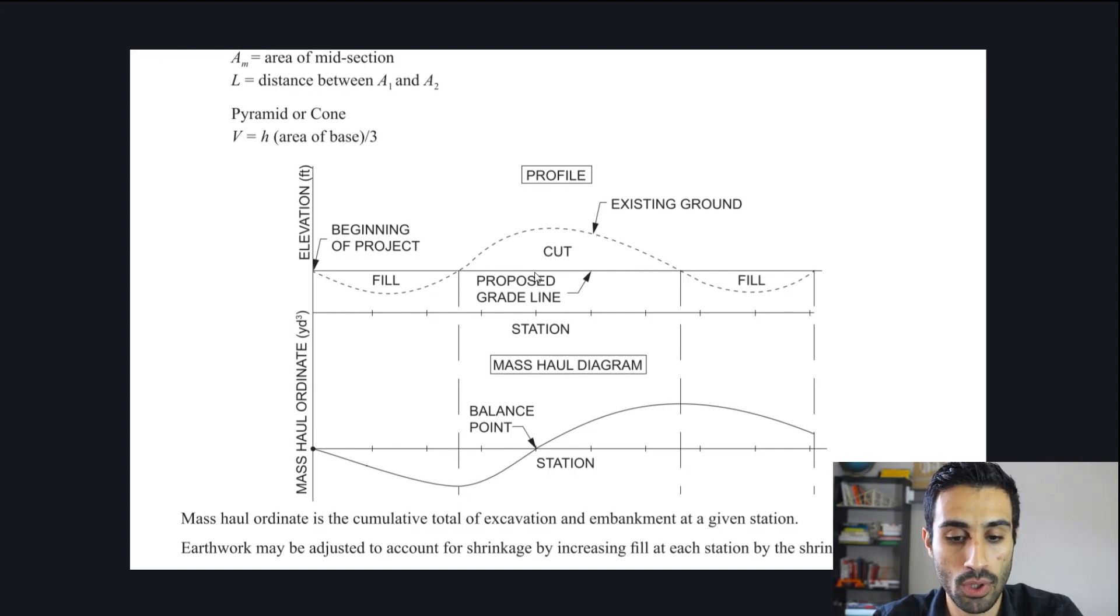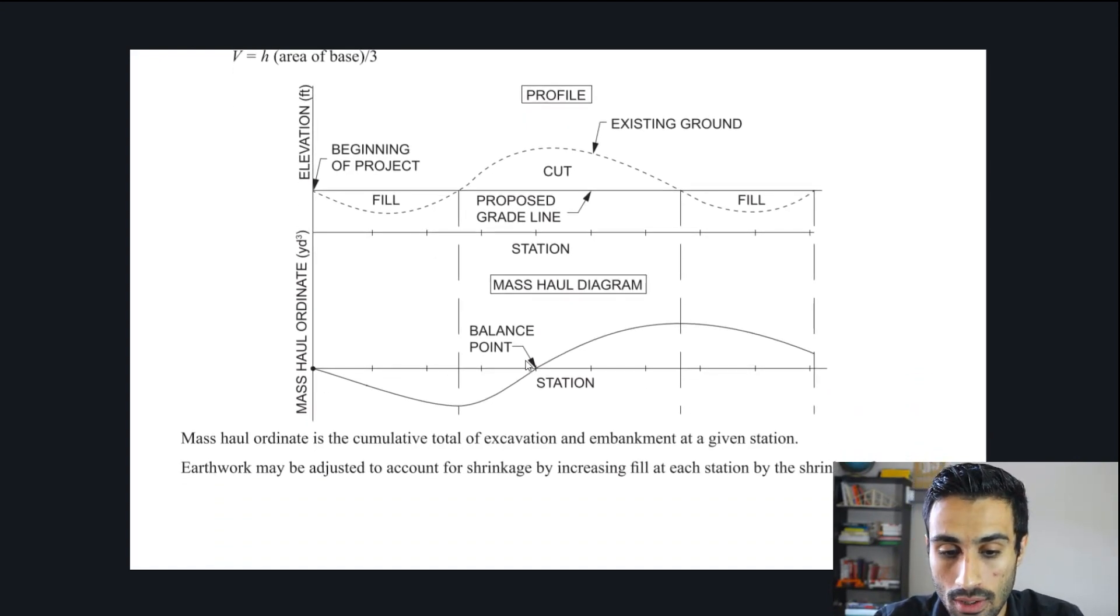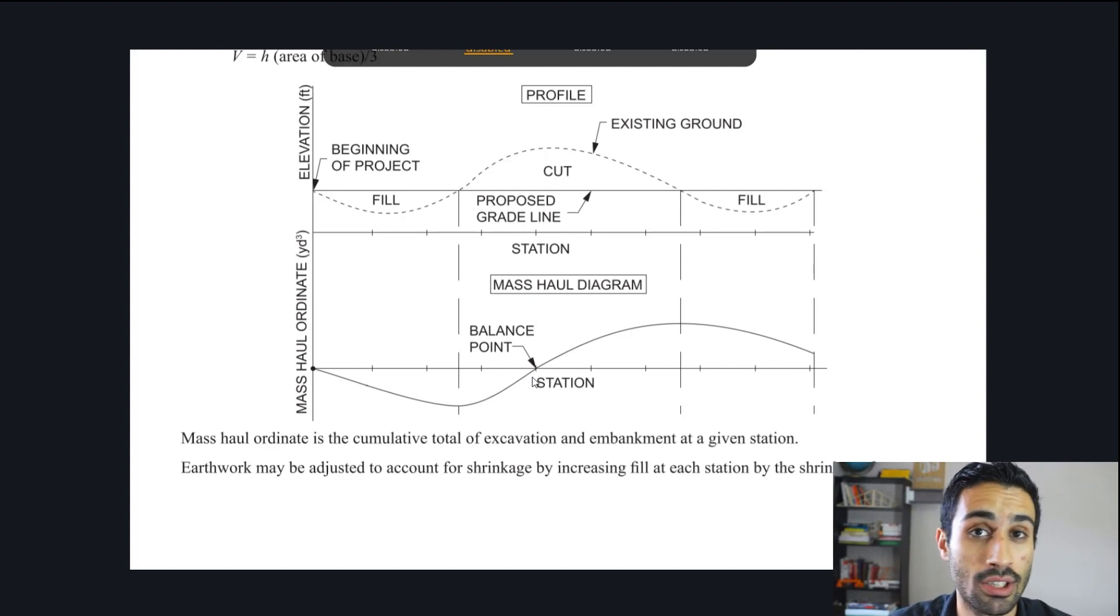When you have the existing ground and the proposed grade, that's the profile. For a profile, we can get something called the mass haul diagram. Then we get that mass haul diagram. They denote it here. They denote the balance point. Maybe we'll get an easy conceptual question. Click on the graph, find the balance point. Just know it's just the point where it's zero. Basically this is zero.